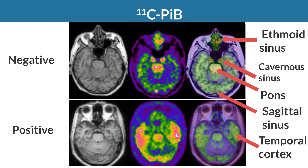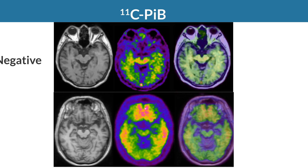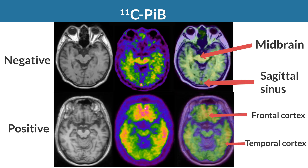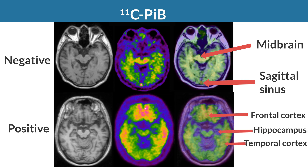High accumulation is observed in the ethmoid sinus, sagittal sinus, and cavernous sinus in a negative case. At the midbrain level, frontal and temporal cortices show high accumulation in a positive case. On the other hand, the hippocampus shows low accumulation in a positive case.